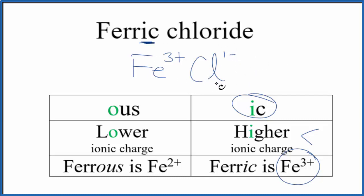So what I can do now to balance these charges is use the crisscross method. I can move the 1 down here and the 3 over here. I can get rid of this, and we don't need the 1, and we end up with FeCl3 as the formula for ferric chloride.